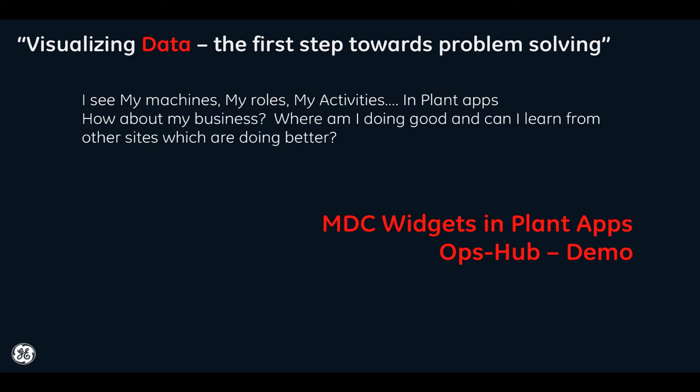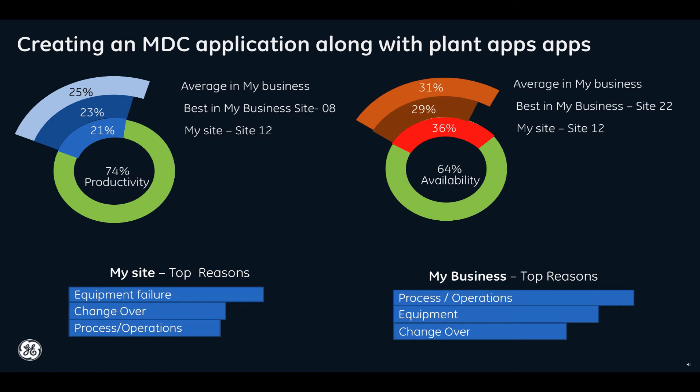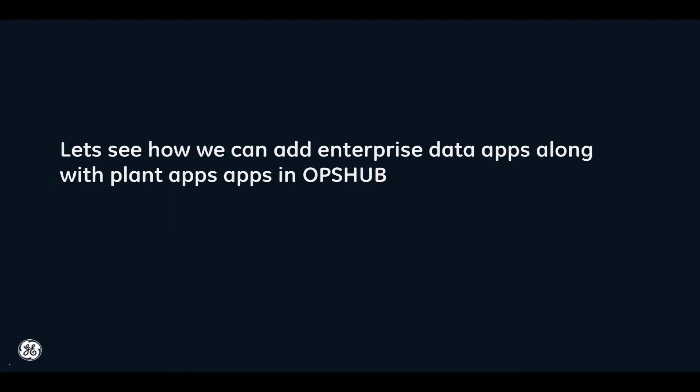So let's create a simple app using MDC widgets to demonstrate this comparison. This would be the simple app that we would create. This app would run in the same UI client as your plant apps. Here you can see the worst and the best in your business and where you stand. You would also see the top reasons for availability in your site and how it could differ when viewed from the enterprise perspective. So let's get started.